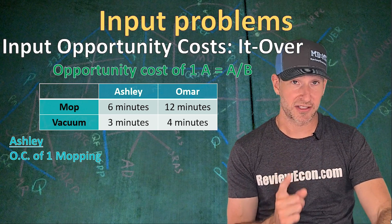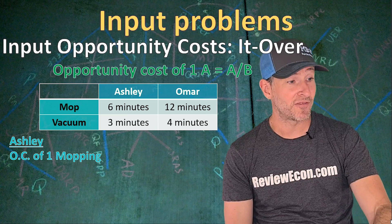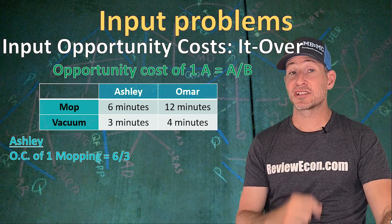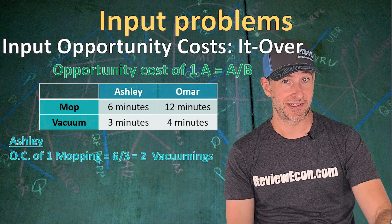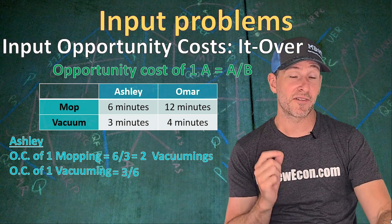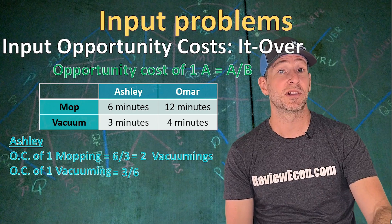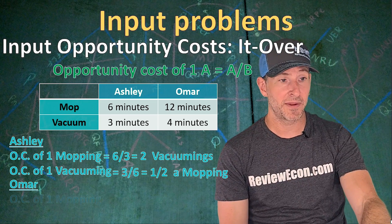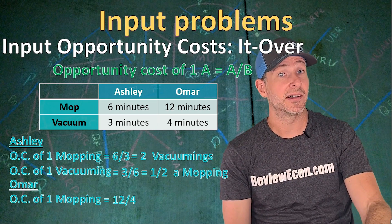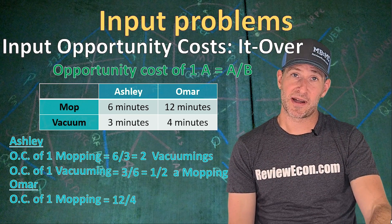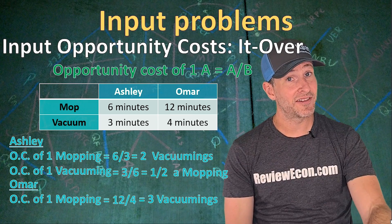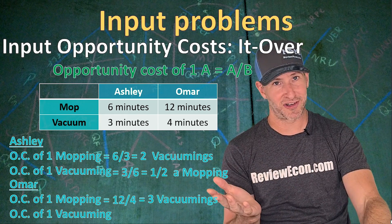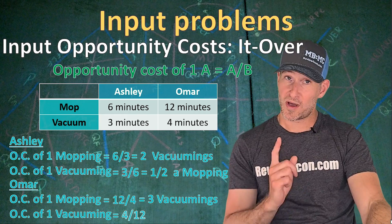For Ashley, the opportunity cost of one mopping is six divided by three — she gives up two vacuumings per mopping. Her opportunity cost for one vacuuming is three divided by six, which is one half of a mopping. For Omar, the opportunity cost of mopping is 12 divided by four — three vacuumings lost every time he mops. The opportunity cost of one vacuuming for Omar is four divided by 12, which is one third of a mopping — and it will always be the reciprocal of the first good.